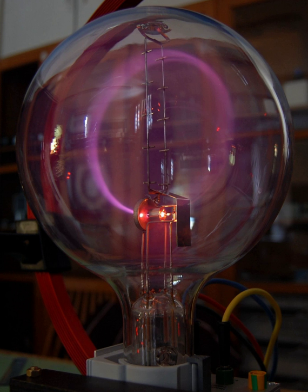Crookes found that as he pumped more air out of the tubes, the Faraday dark space spread down the tube from the cathode toward the anode, until the tube was totally dark. But at the anode end of the tube, the glass of the tube itself began to glow.